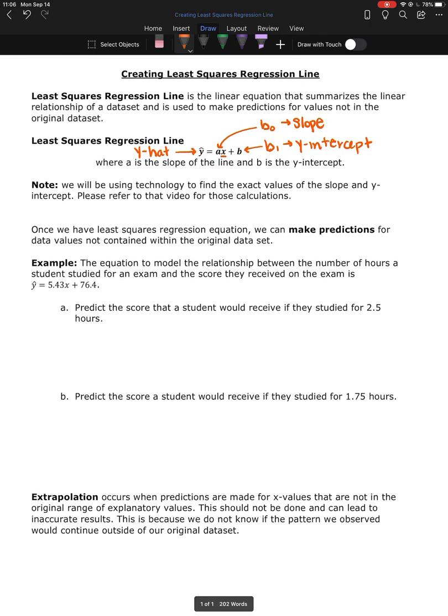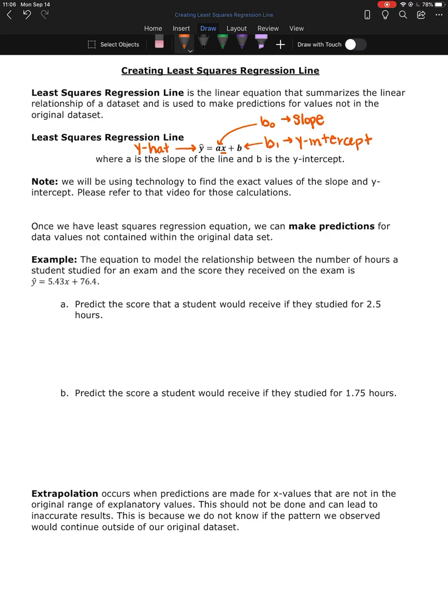So once we have a regression line, we can use it to make predictions for data values that were not in the data set. So here we have the equation to model the relationship between the number of hours a student studied for an exam and the score they received is y hat equals 5.43x plus 76.4.